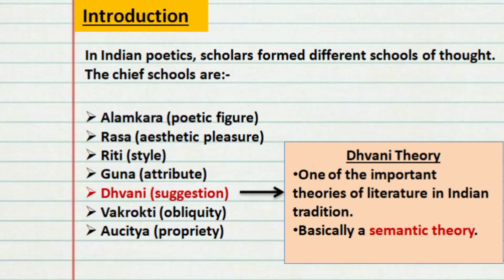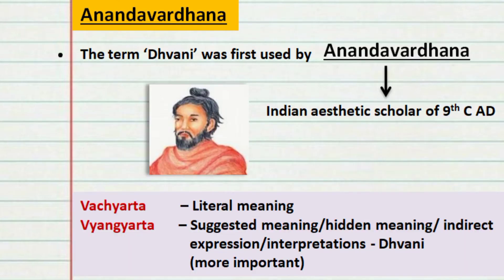Dhvani theory is a semantic theory. That is, this theory deals with the meanings — meanings of words or sentences. Just as we discussed Abhinava Gupta when we were dealing with the Rasa theory, it's important to know about Anandavardhana when we learn about the Dhvani theory.